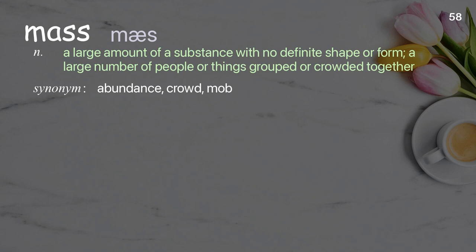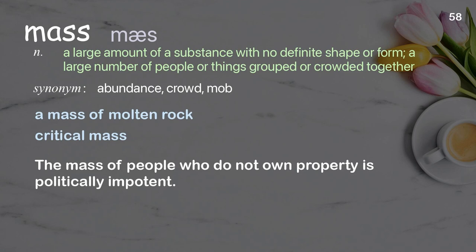Mass: a large amount of a substance with no definite shape or form; a large number of people or things grouped or crowded together. Examples: a mass of molten rock, critical mass. The mass of people who do not own property is politically impotent.